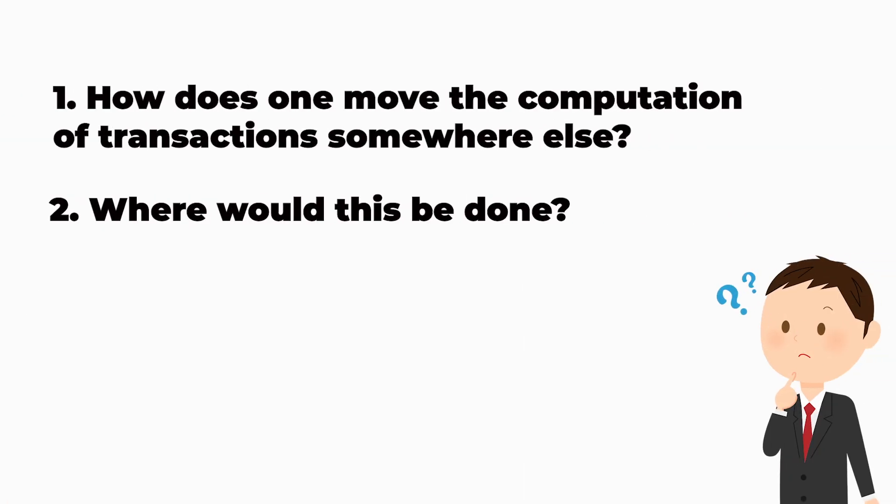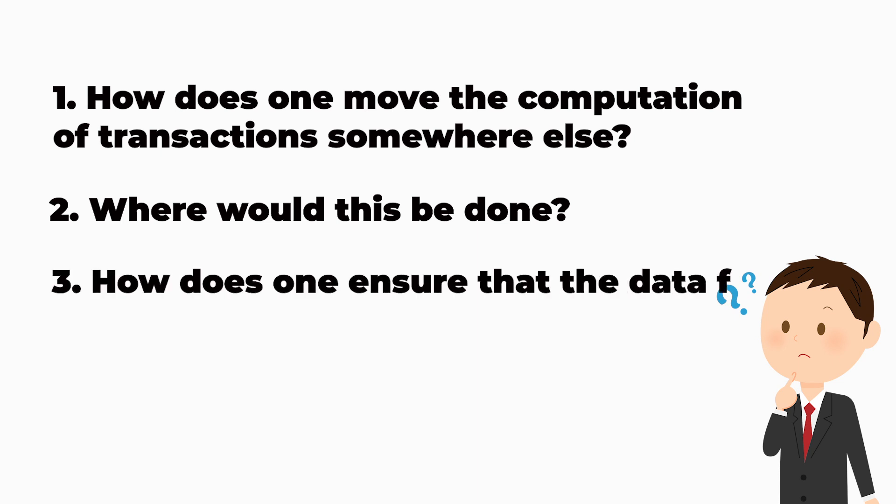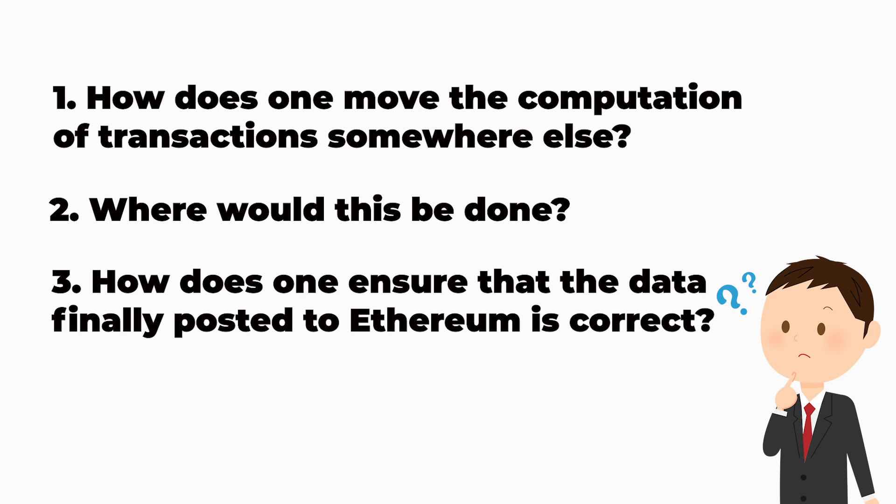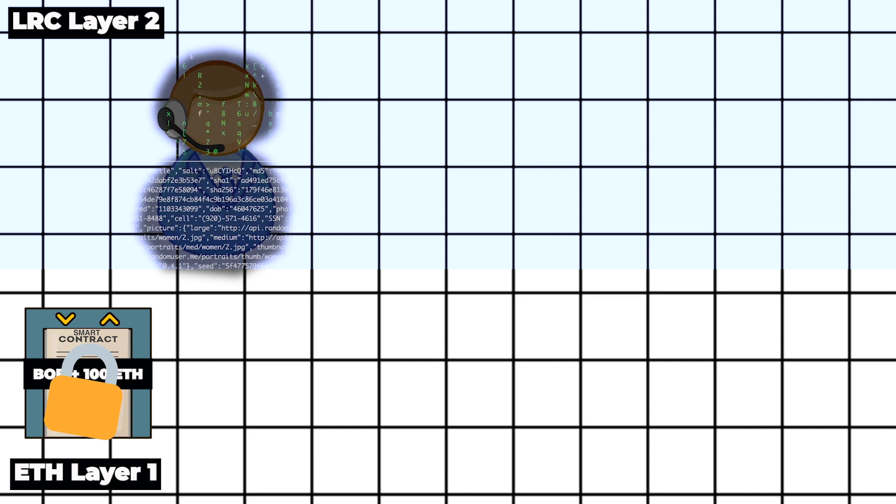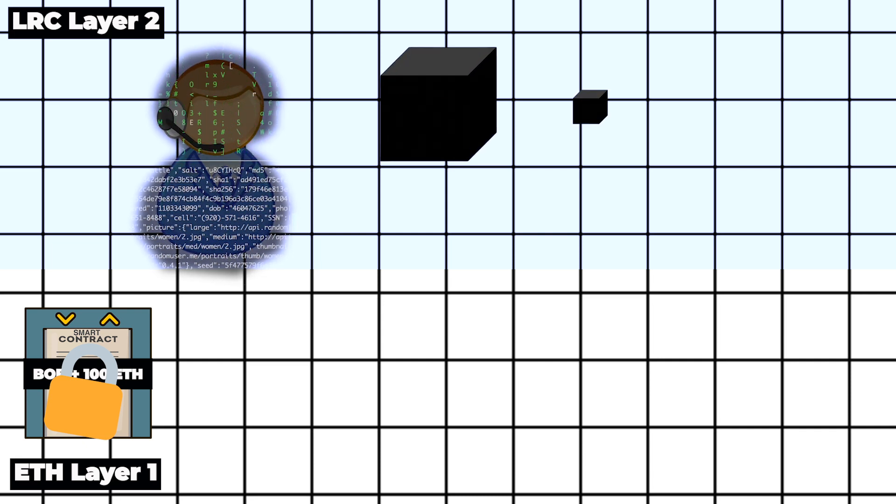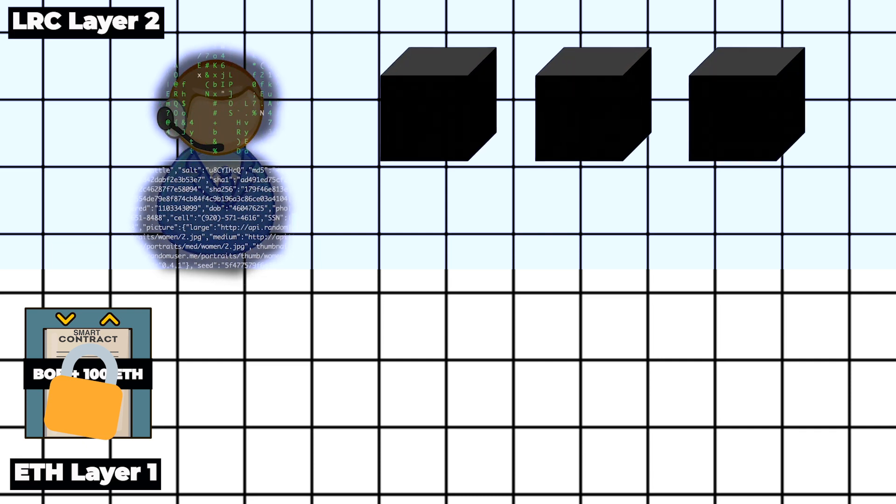This brings us to the third question, which is how can we be sure that the operator managed by the Loopring team didn't cheat and has submitted the correct data to the Ethereum blockchain? Well, the operator needs to prove to Ethereum that its rollup blocks on layer 2 are clean.